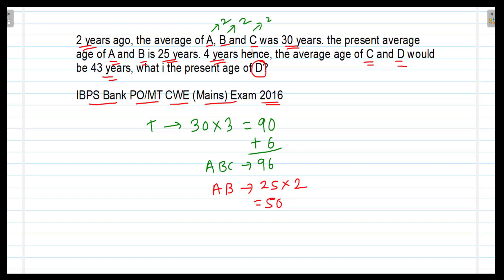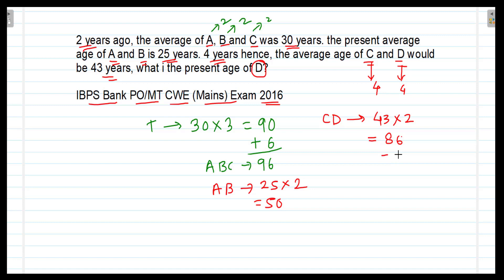It is further said that 4 years hence, the average age of C and D would be 43 years. So 4 years hence, that will be 43 into 2, which equals 86 years. Their present age will be less, since C's age and D's age will each decrease by 4 years, giving a total decrease of 8 years. So 86 minus 8 equals 78 years. This is the present age of C and D.